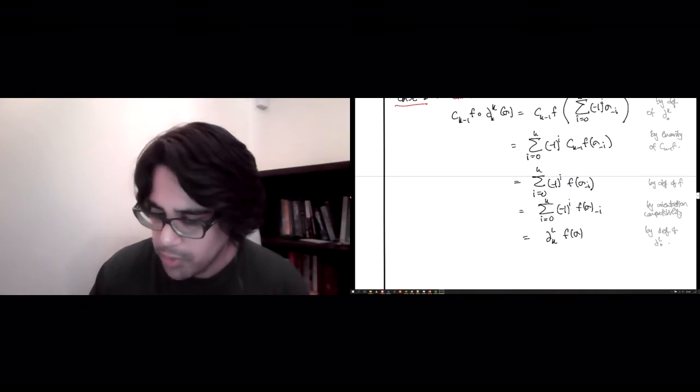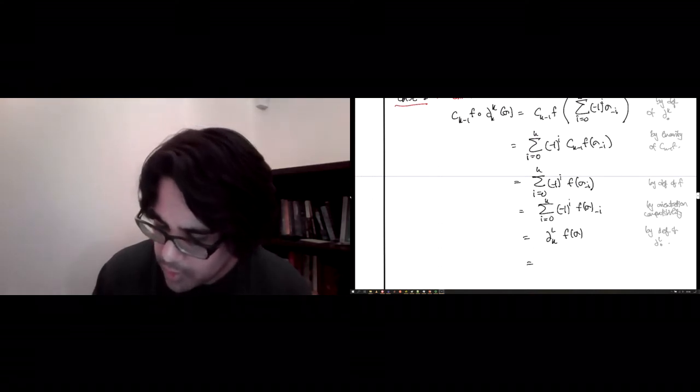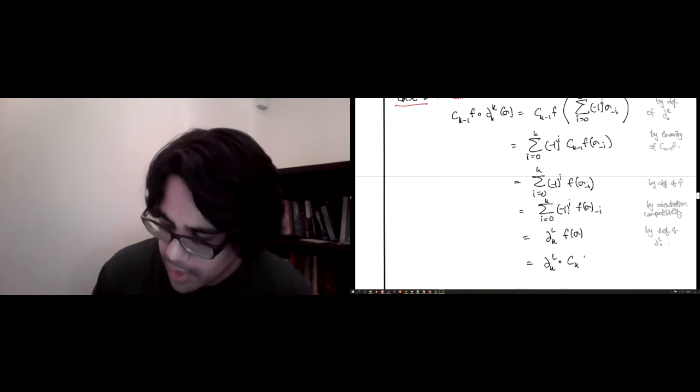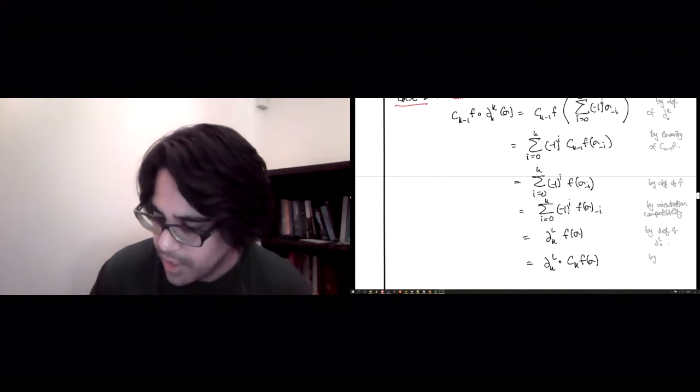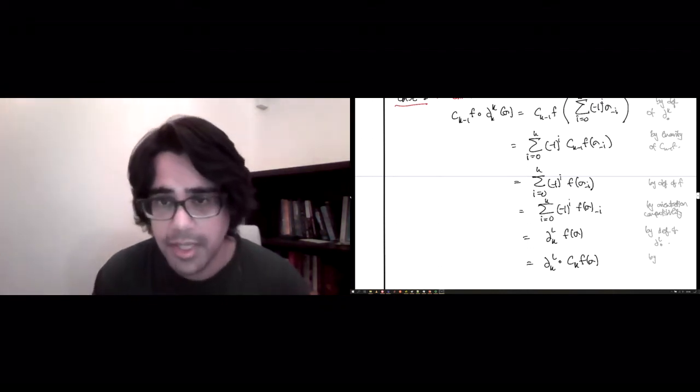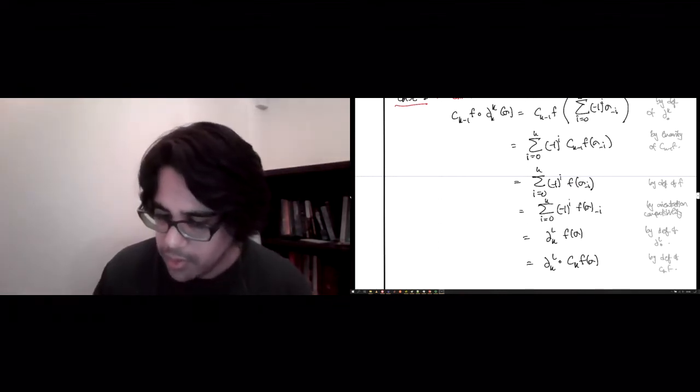Okay, well, this isn't quite what we promised to prove, but you realize that this is going to be the same as c_k(f) of σ. Again, this is by definition because c_k(f) is the same as f on σ where the dimension is preserved. And this is what we had set out to prove.